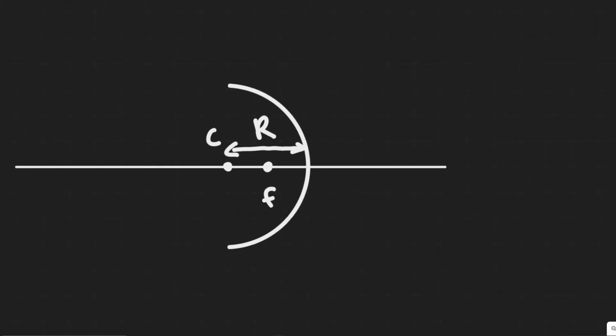As always, you want to draw what's going on here. We're told that we have a concave mirror, which means it's going to be shaped like this. If it was convex, it would be like this relative to our object. Since it's concave, we know it's going to be shaped like this.